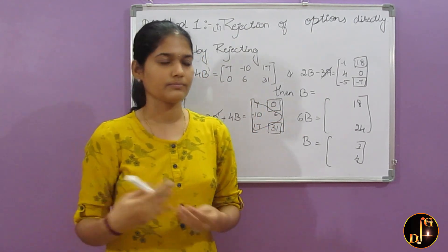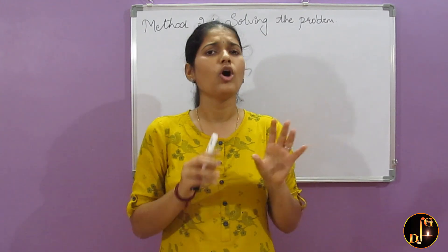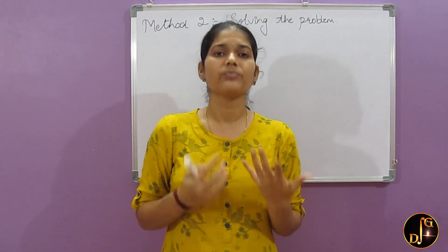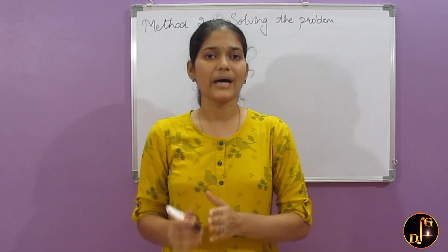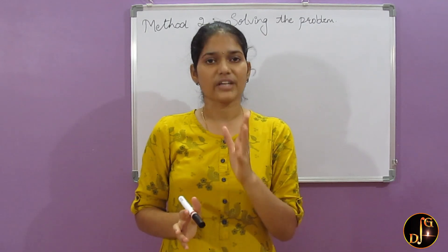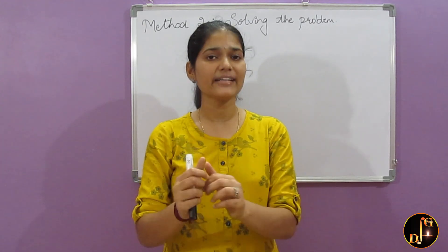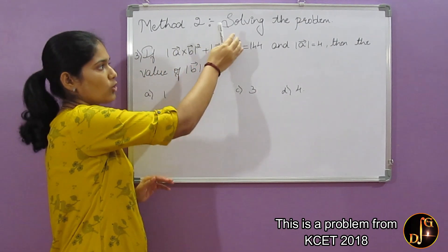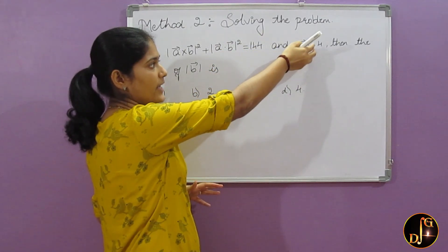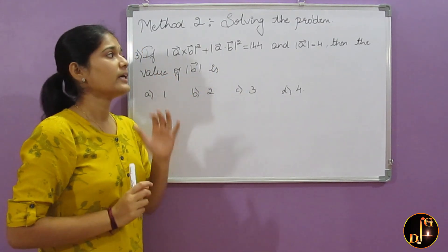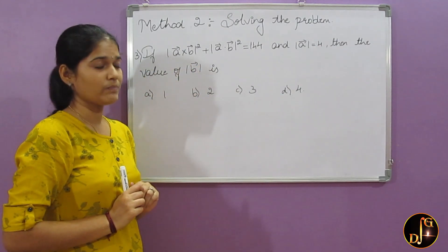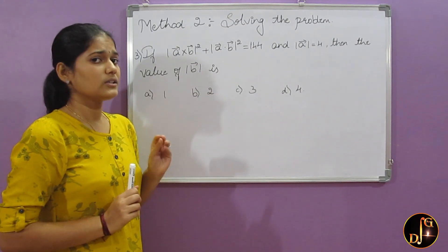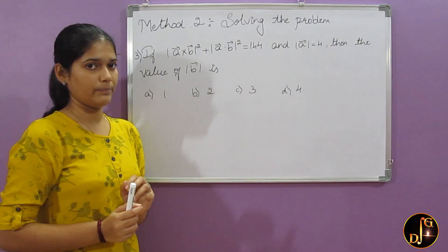Now we will move on to the next method. There will be some situations in which you cannot reject the options directly, and you cannot go through the options by solving only needed steps either. Then what you have to do? The next method is solving the whole problem. But while solving, don't write all the steps - just write whatever is needed. To explain this method, I will take an example. Look at this problem.